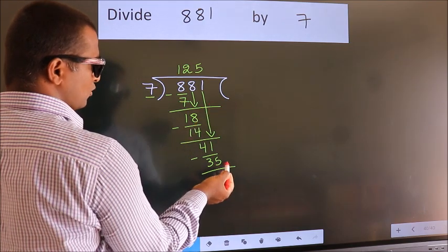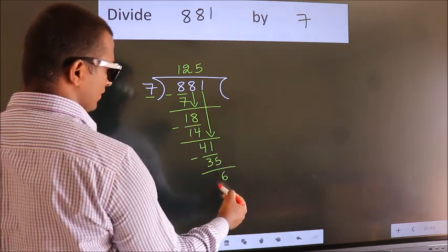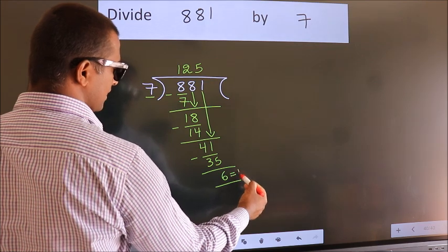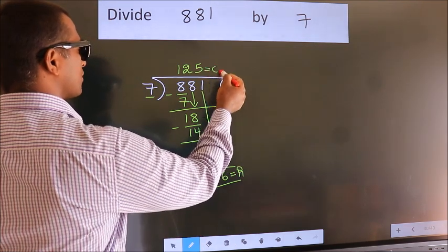No more numbers to bring it down. So, we stop here. This is our remainder. This is our quotient.